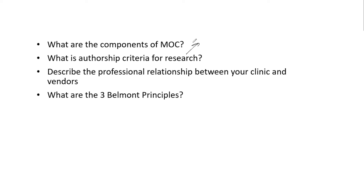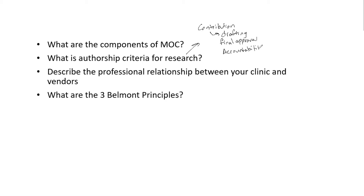Authorship criteria — this is pretty important. You want to verify that each individual on your paper is actually making significant contributions to the work. This may include drafting the work, the research, or the actual manuscript. Everyone on the list of authors needs to look at the work, verify it, make edits, and give final approval. There also has to be some type of accountability for that work.